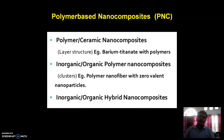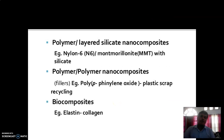Secondly, inorganic-organic polymer nanocomposites — these are cluster structures. For example, polymer nanofiber with zero-valent nanoparticles. Thirdly, inorganic-organic hybrid nanocomposites. For example, polymer-layered silicate nanocomposites — for example, nylon-6, simply called N6, with montmorillonite MMT, which is a clay with silicate.